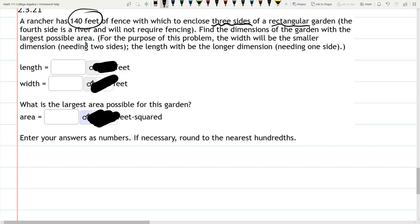Now, if we're making a rectangle and we have four sides that we have to fence, a square is the best. But that's not true if you're only fencing three sides. For the purpose of the problem, the width will be the smaller dimension, which needs two sides.